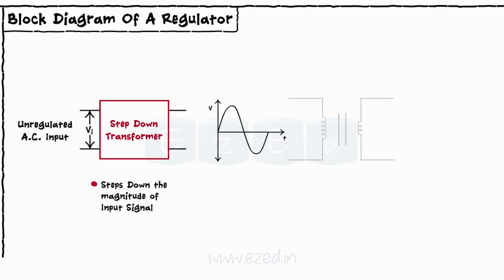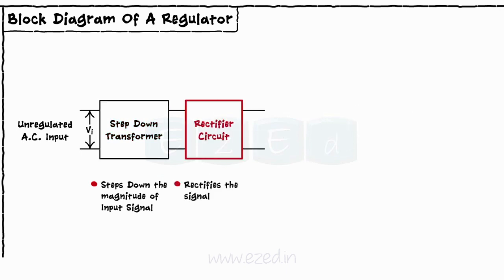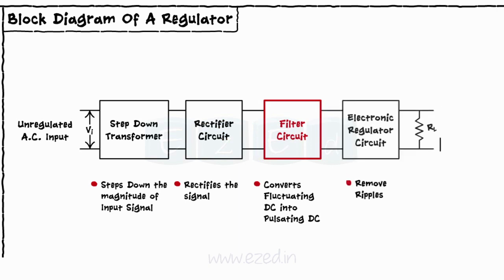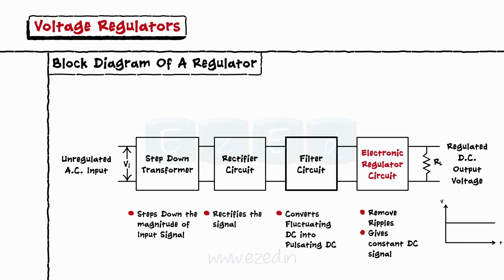The step-down transformer steps down the magnitude of the AC input voltage to a lower magnitude AC signal. This signal is fed to the rectifier. The output of the rectifier circuit is a fluctuating DC signal. A filter converts the fluctuating DC signal into a pulsating DC signal with some ripples present. And lastly, a regulator removes the ripple from the filter output and keeps the magnitude of the DC signal constant.